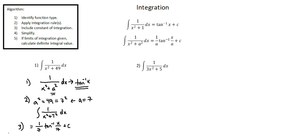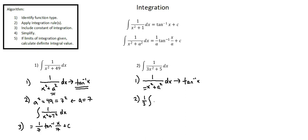Moving on to Example 2: the integral of 1 over 3x squared plus 5 with respect to x. Step 1: identify function type. In this case, what we see is the format of 1 over something times x squared plus a constant — that constant will be a squared. This tells us that the integral relates to inverse tangent. Step 2: apply integration rule. Because of the coefficient in front of the x squared term, I'm going to factor and rewrite my integral. I'll factor out 1 over 3, because the coefficient of x squared is 3, which is in the denominator — thus 1 over 3.